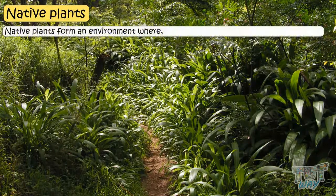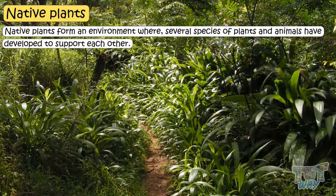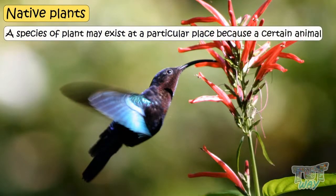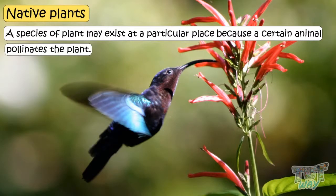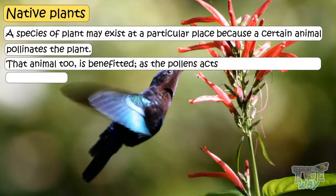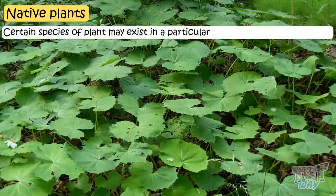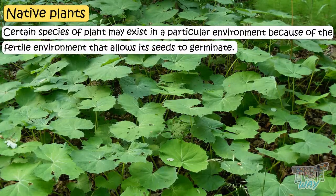Native plants form an environment where several species of plants and animals have developed to support each other. A species of plant may exist at a particular place because a certain animal pollinates the plant — that is, spreads or scatters its pollens in different locations and helps in fertilization. That animal too is benefited, as pollens act as a source of food for it. Also, certain species of plant may exist in a particular environment because of a fertile environment that allows its seeds to germinate.